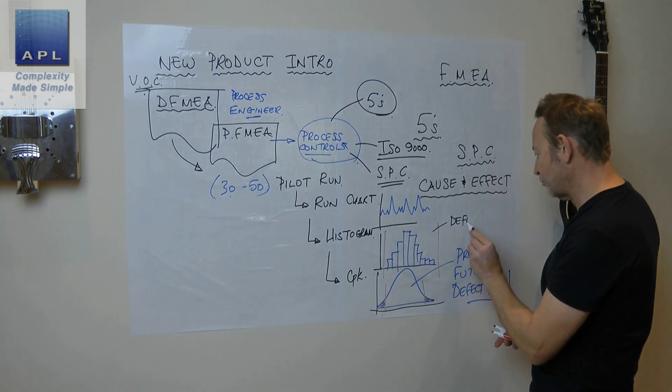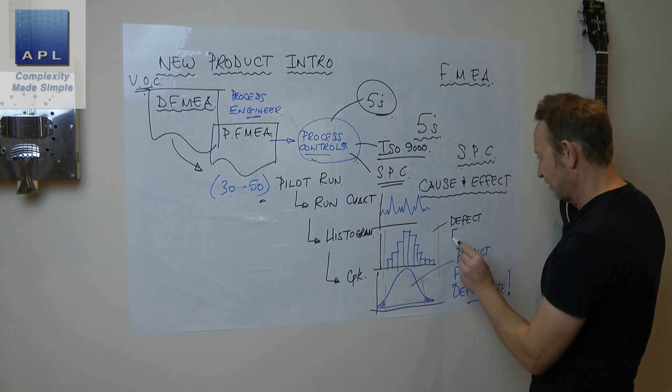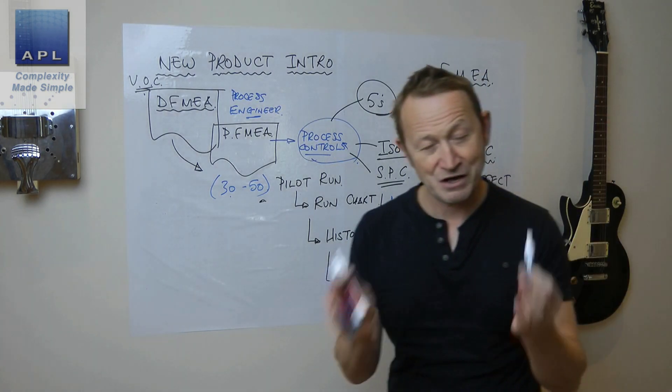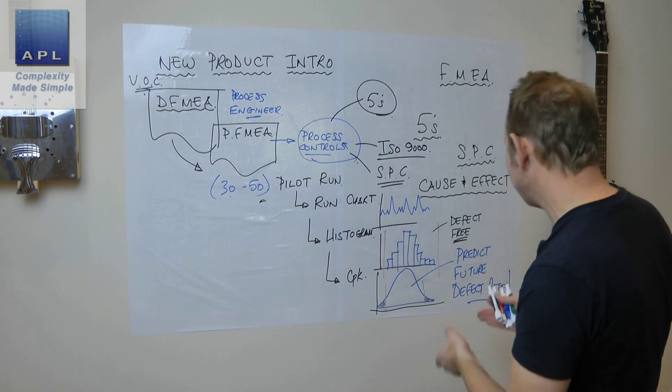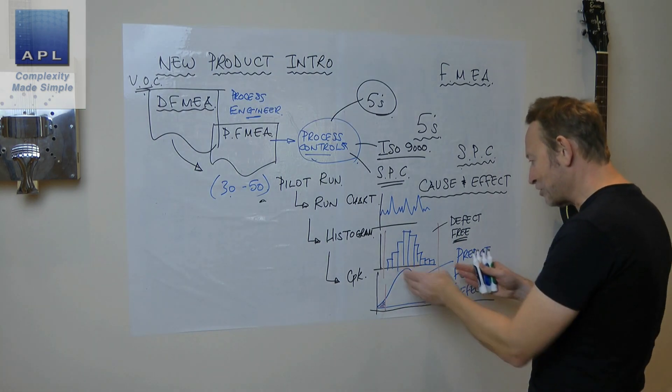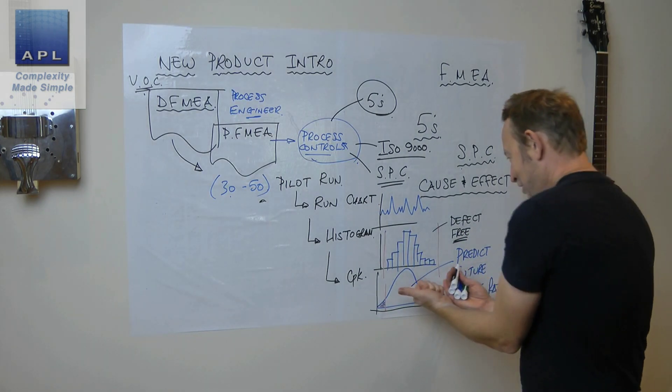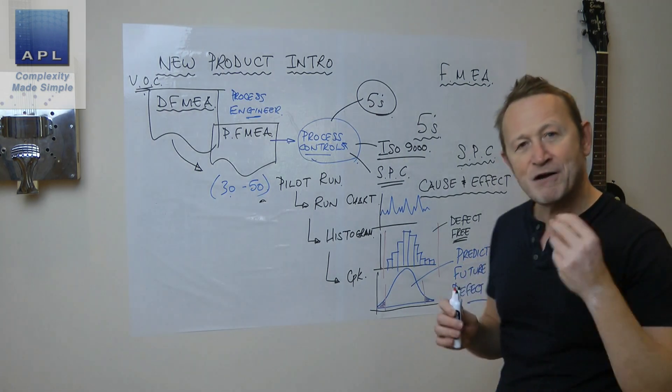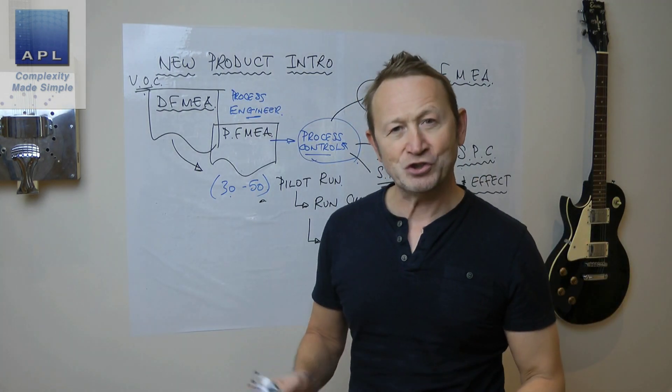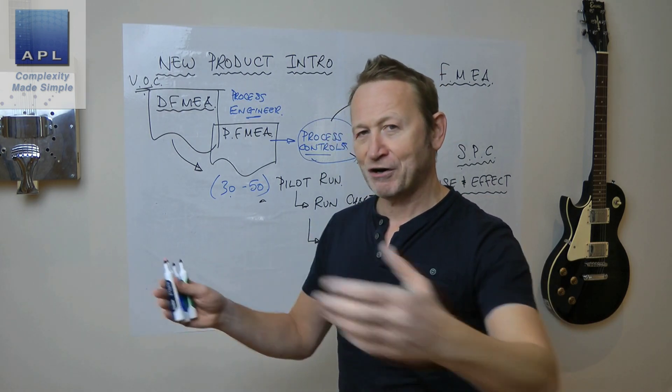If you assume that because your pilot run is defect free, the future is going to be defect free, you will be making a big mistake. This is going to predict results you didn't capture in your pilot run. It's going to say there's more extreme results out there. It's going to stop you from blundering into a situation where you thought the process was going to be fantastic, you switch it on, it makes piles of defects, and now you're in chaos.